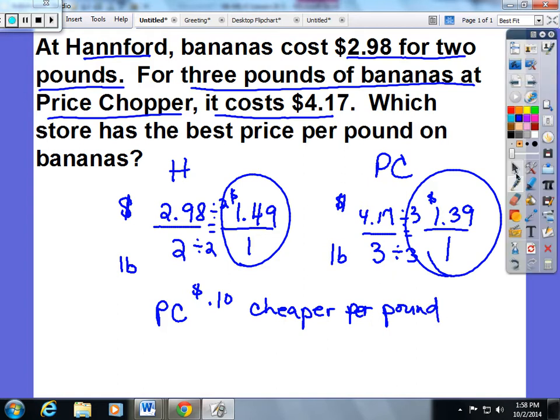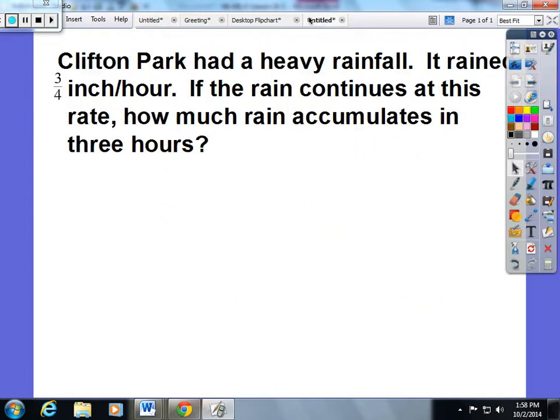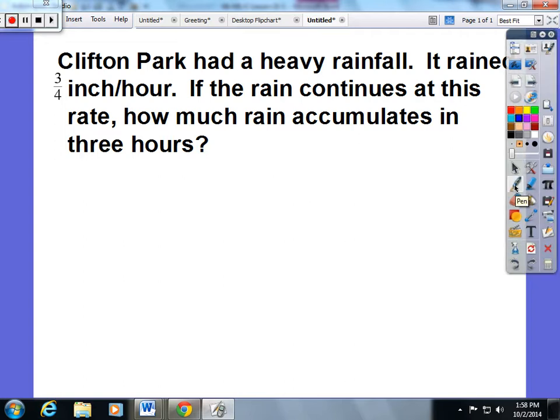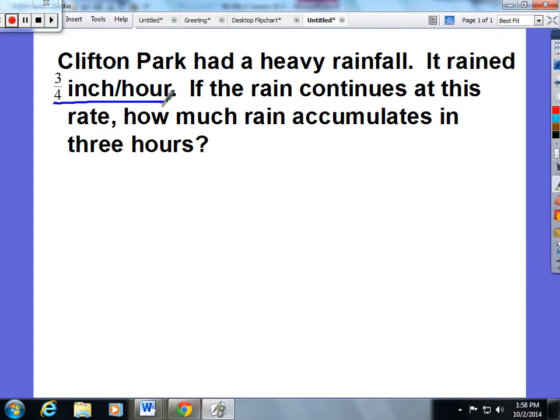The second type of problem we did in today's class in Lesson 17 is this: Clifton Park had a heavy rainfall. It rained 3 fourths inch per hour. If the rain continues at this rate, how much rain accumulates in 3 hours? Well, we've encouraged the kids to start with the ratio they give you.